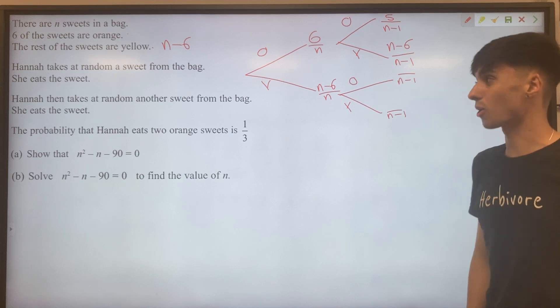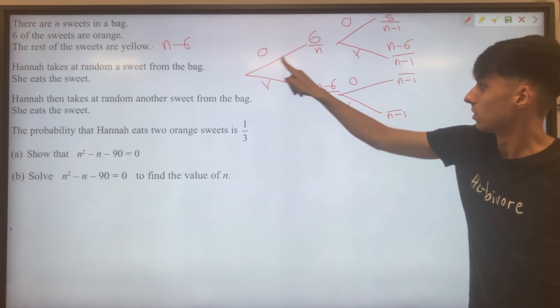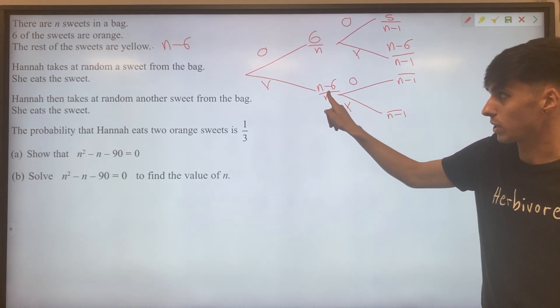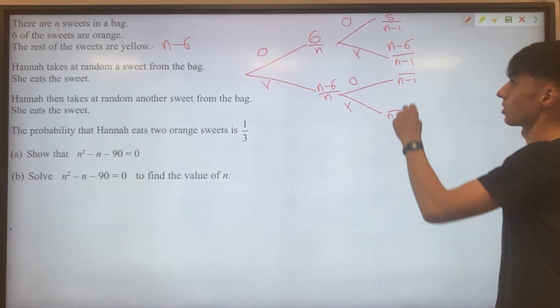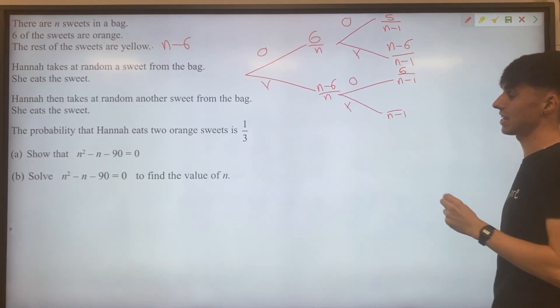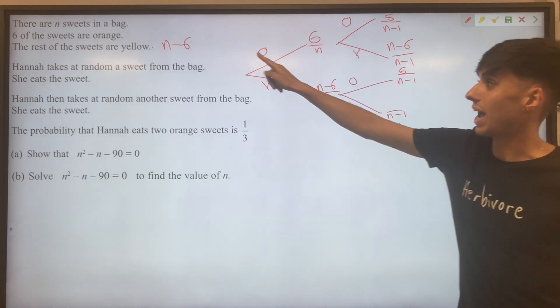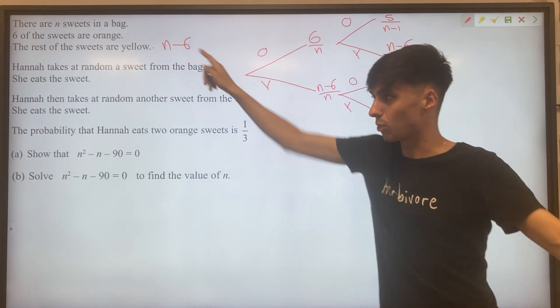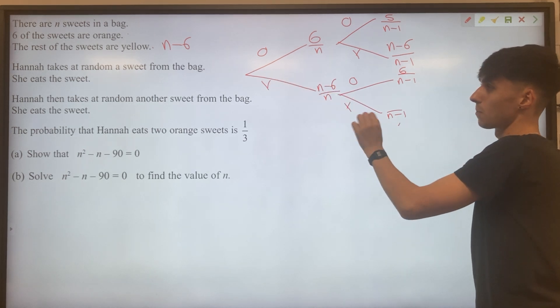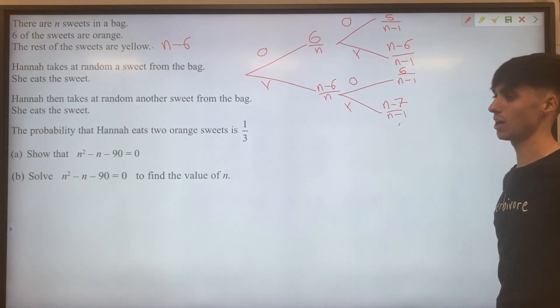On the second branch of our tree, she ate a yellow sweet first, so she hasn't affected the number of orange. That means here we would still have six. But for the yellows, we had N minus six, she ate one of them, went down on a yellow, so now it's N minus seven here.